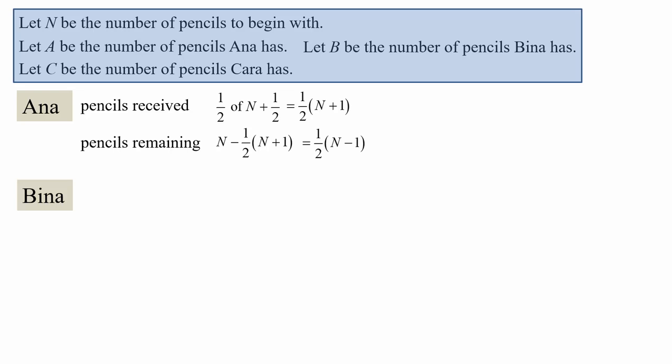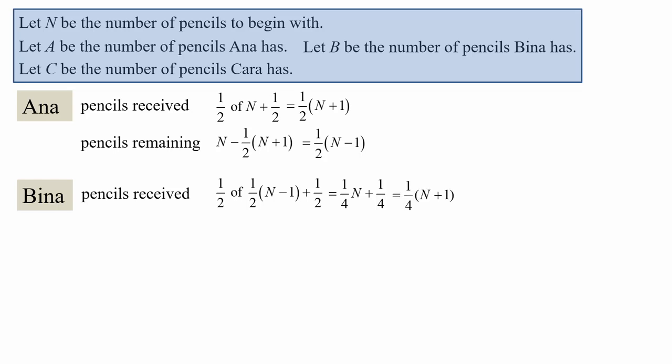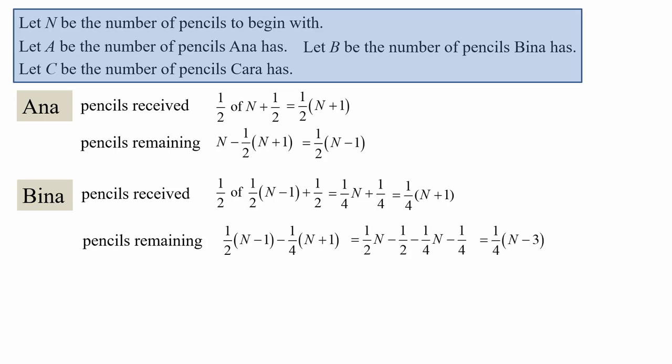Let's move on to Bina. How many pencils does she receive? It'll be a half of the amount of pencils remaining, which was a half bracket N minus one. So it'll be a half of a half bracket N minus one, plus another half. And that can be simplified: first it comes to a quarter N plus a quarter, and taking out a factor of a quarter, it becomes a quarter bracket N plus one. So the pencils remaining after Bina has had her share is a half bracket N minus one minus a quarter bracket N plus one, and that simplifies to a quarter bracket N minus three.